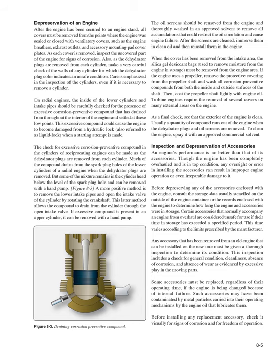When the cover has been removed from the intake area, the silica gel desiccant bags used to remove moisture during storage must be removed. If the engine uses a propeller, remove the protective covering from the propeller shaft and wash all corrosion preventive compounds from both inside and outside surfaces, then coat the shaft lightly with engine oil. Turbine engines require the removal of several covers on many external areas. As a final check, see that the exterior of the engine is clean. Usually a quantity of compound runs out of the engine when the dehydrator plugs and oil screens are removed; spray with an approved commercial solvent to clean.